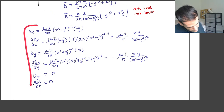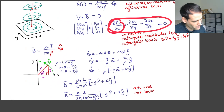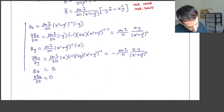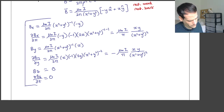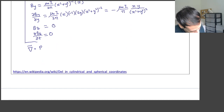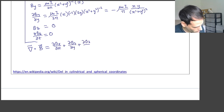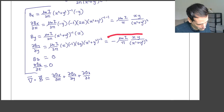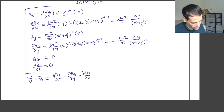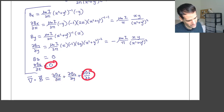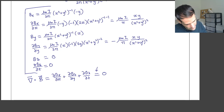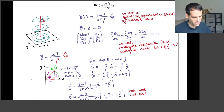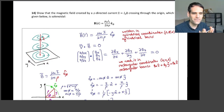Now we have all the elements needed to calculate the divergence. We just add the three partial derivatives. The partial of Bx with respect to x is exactly equal to minus the partial of By with respect to y, so when we add them they cancel out, and the third term is zero anyway. Therefore the divergence of B equals zero, and we have proved that the magnetic field of a wire is a solenoidal field, as expected from Maxwell's equations.